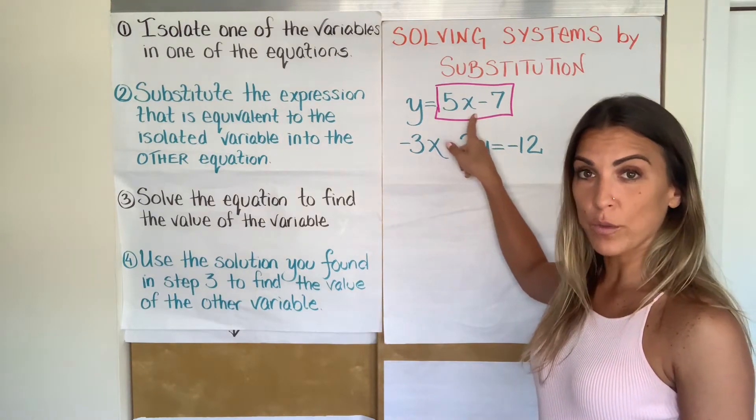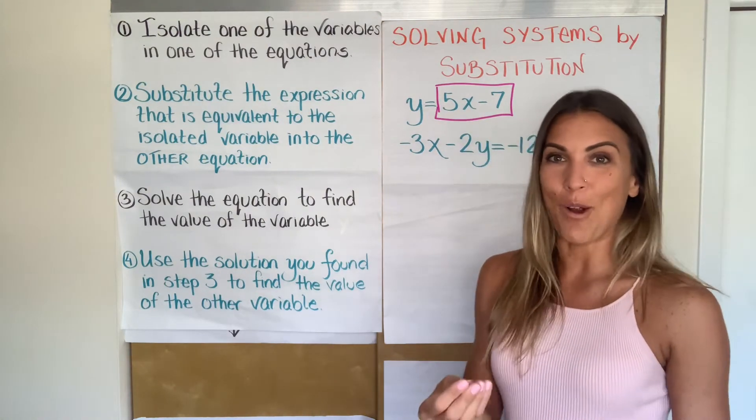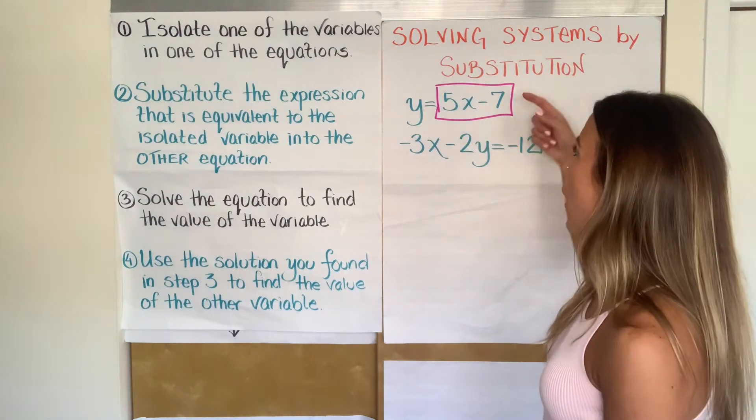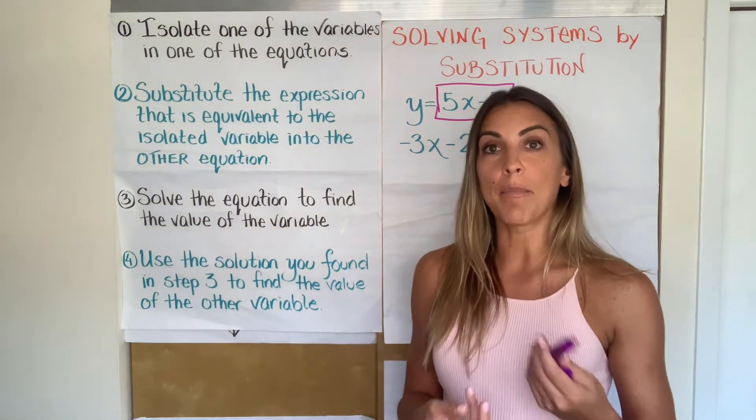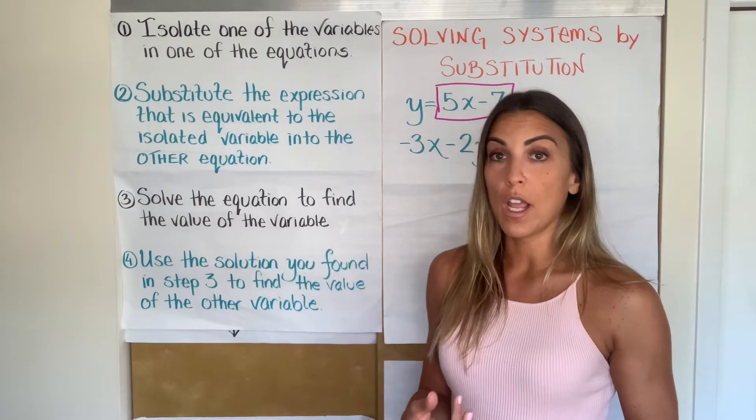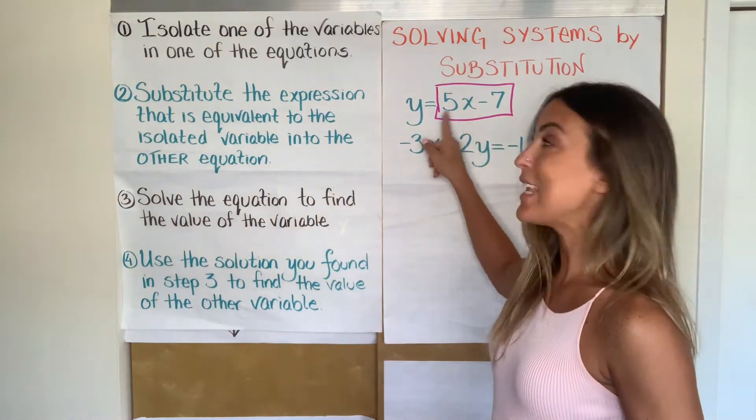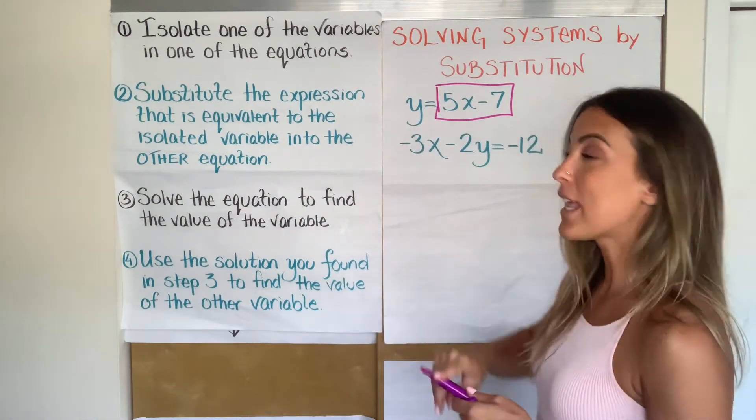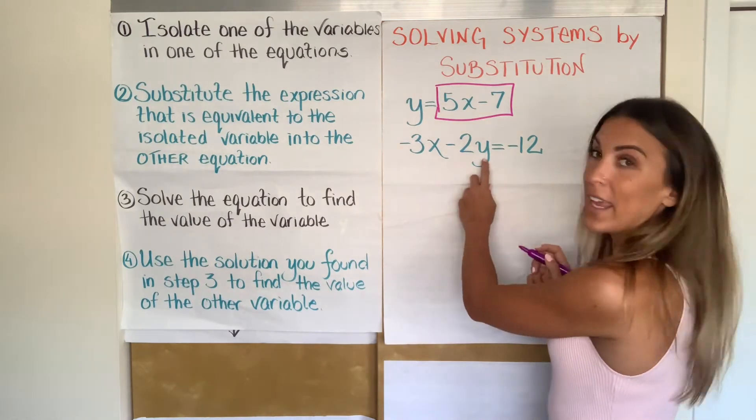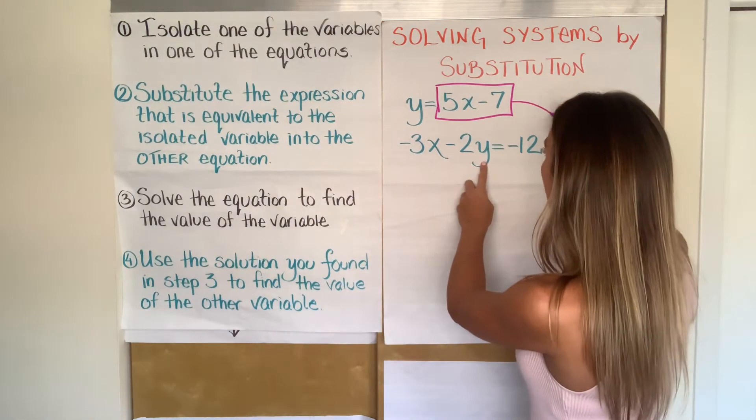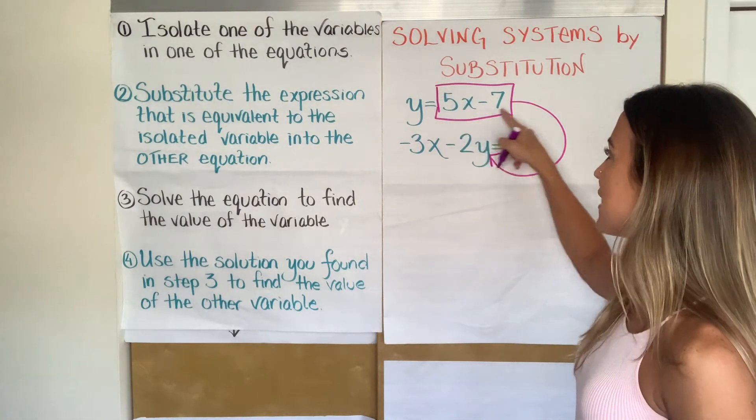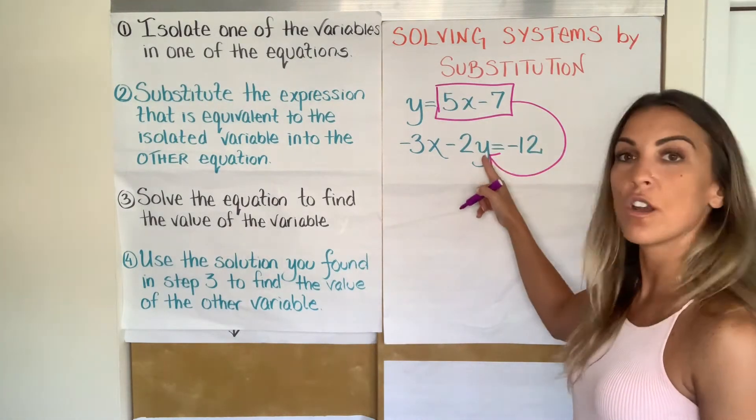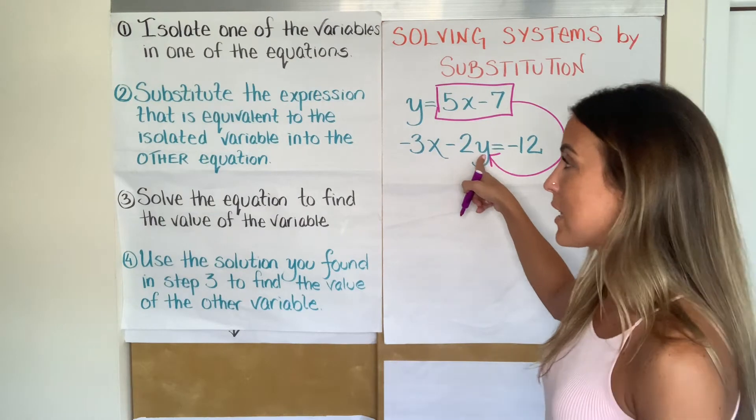So this expression is in my top equation. It's asking me to substitute it into the bottom equation. Where does it want me to substitute this? Pause the video, think before I say it. When it asks me to substitute, it means you're replacing one thing with something else that you know is equal to it. So I know that this expression is equal to Y. That means that I'm going to replace Y in the other equation with this whole expression. So this expression in the purple box is going to come into the other equation for Y. That is step two.